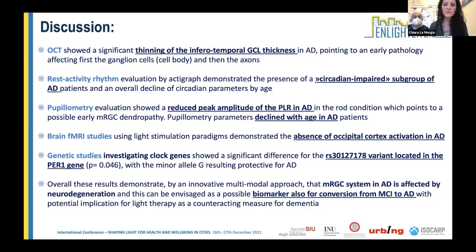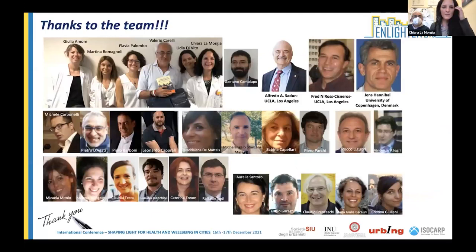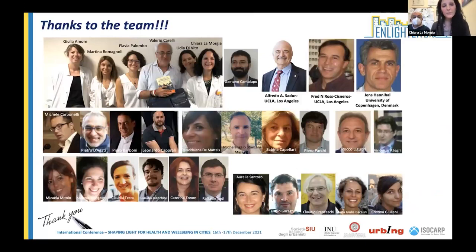In conclusion: OCT showed significant inferotemporal ganglion cell layer thinning indicating early pathology affecting ganglion cells before axons; actigraphy identified a circadian-impaired Alzheimer's subgroup; reduced PLR peak amplitude correlated with age in Alzheimer's patients; fMRI showed absent occipital cortex activation with blue light; and genetics identified a PER1 variant. Overall, this multimodal approach demonstrates that the melanopsin system is affected in Alzheimer's by neurodegeneration, potentially serving as a biomarker for MCI-to-Alzheimer's conversion, with implications for light therapy as a counteractive measure.